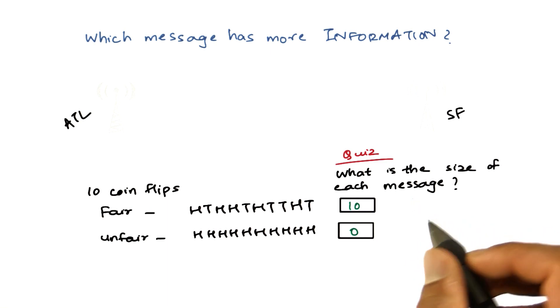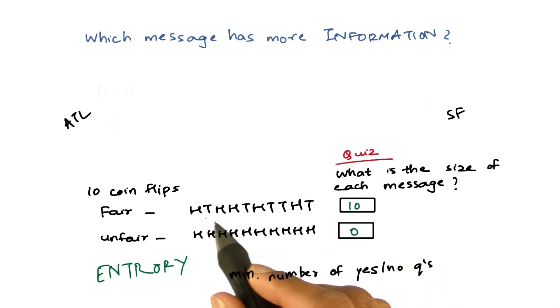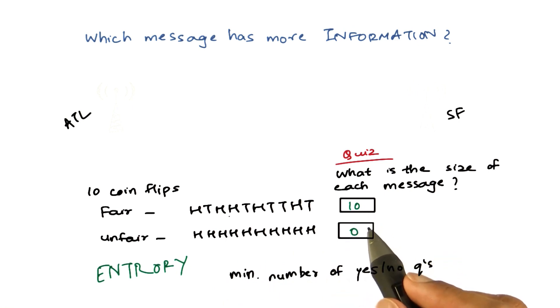Shannon described this measure as entropy. He said, if you had to predict the next symbol in a sequence, what is the minimum number of yes or no questions you would expect to ask? In the first example, you have to ask a yes or no question for every coin flip. So you have to ask at least one question for every flip.